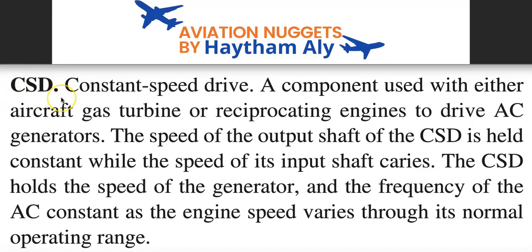The APU — Auxiliary Power Unit — electrical generation component on its accessory gearbox is just called a generator, because the APU when it runs, it runs at a fixed speed of 100%. The fuel control unit always does its job to maintain a fixed rotation speed or RPM of the APU rotating shaft. So we don't need a Constant Speed Drive on the APU — we just need a generator, because the output shaft of the APU already has a constant speed.